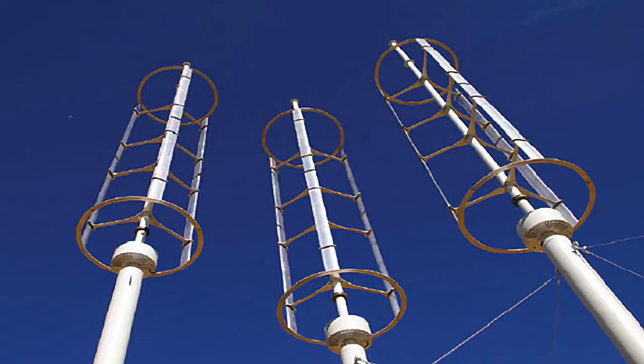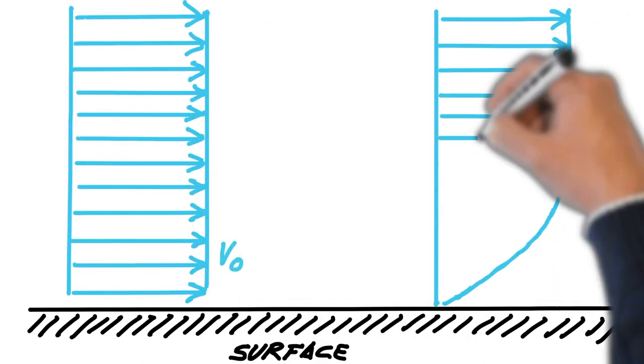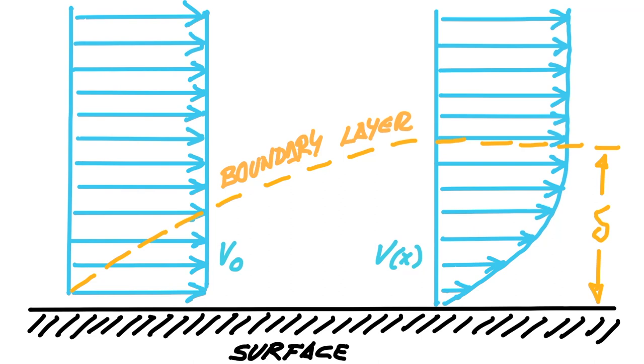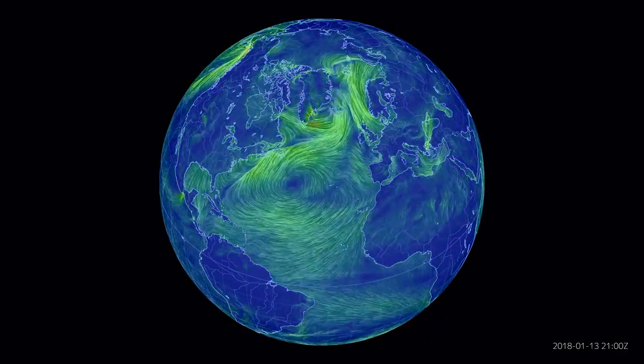In physics and fluid mechanics, a boundary layer is a layer of fluid near a bounding surface where the effects of viscosity are significant. When referring to the atmosphere, this boundary layer can be as shallow as 50 meters in the Arctic and as thick as 4,000 meters in the deserts. However, the average thickness is around 300 meters.